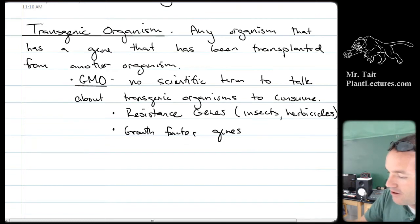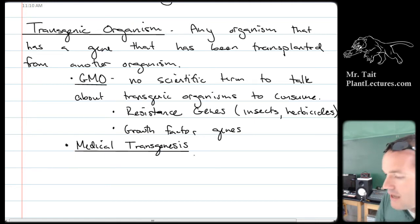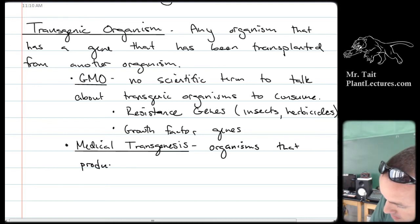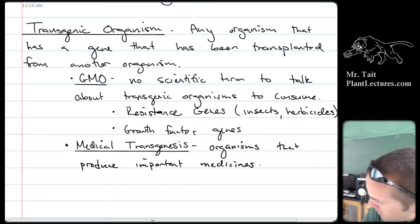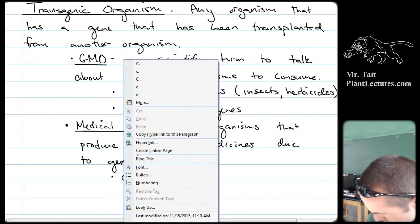We shouldn't have this many people on earth, and so the only way to continue to have this many people is to continue to grow our technology and do better at making crops more efficiently. There's also medical transgenic organisms that we don't eat - these are organisms that produce important medicines due to gene insertion.